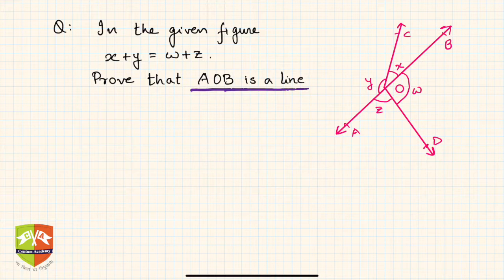For example, if this is a line and you take any point here, the angle around it will be 180 degrees. This is what the concept of a line suggests. So now, I have a point here O. If somehow I prove that x plus y or z plus w, either of them, is 180 degrees, then my problem is solved.